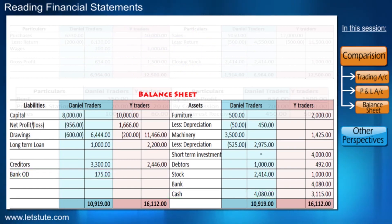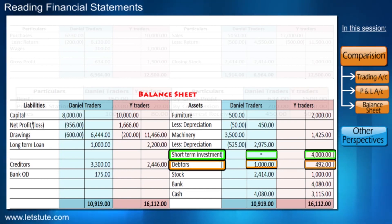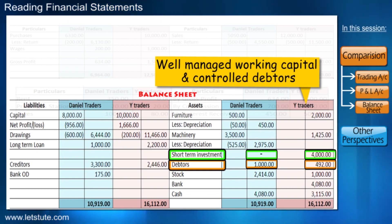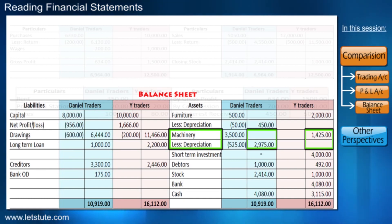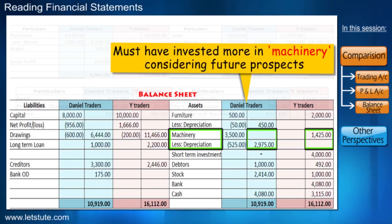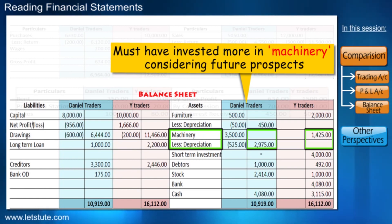Trader Y on the other hand has more investments and fewer debtors, meaning their working capital is a little better managed. Their debtors are also more controlled. Looking at machinery, we can say that Daniel has invested more here — maybe because he is looking at his future prospects or for long-term benefit, or perhaps he has invested in a better machine. So he should make the most out of it.